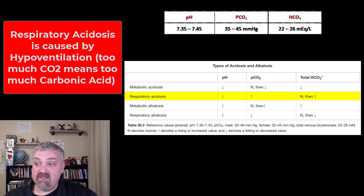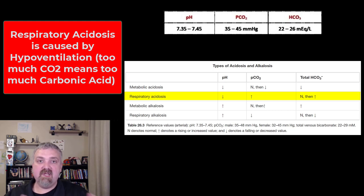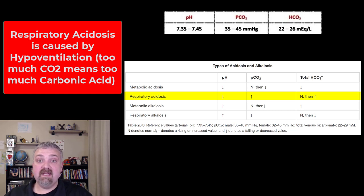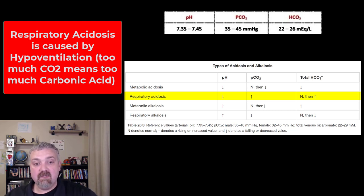What causes respiratory acidosis? Anything that leads to hypoventilation or impaired movement of air. This could be any of your chronic lung problems — COPD, emphysema, asthma, pneumonia, any lung problem acute or chronic. Congestive heart failure can be an issue here too. What else can cause hypoventilation or breathing too slowly? Age, central nervous system disorders, and drugs and other medications as well. Anything that causes you to get rid of too little carbon dioxide would lead to a respiratory acidosis.